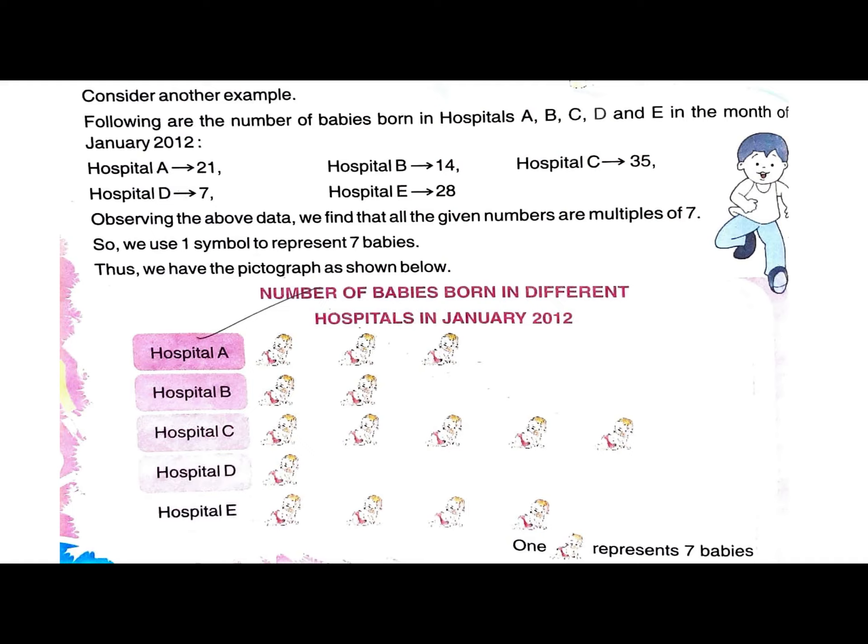Example: The following are the number of babies born in hospitals A, B, C, D, and E in the month of January 2012. Hospital A: 21 newborn babies, Hospital B: 14, Hospital C: 35, Hospital D: 7, Hospital E: 28. This is the numerical data, and we have to present it in the form of a pictograph.